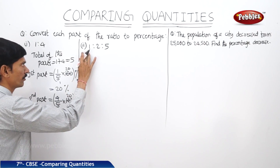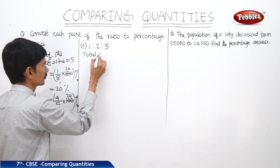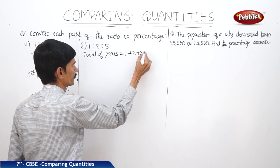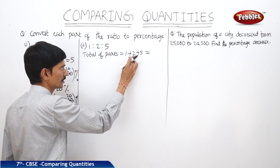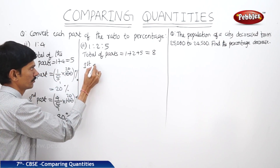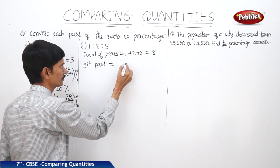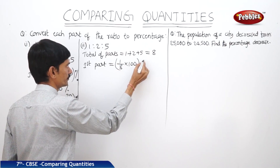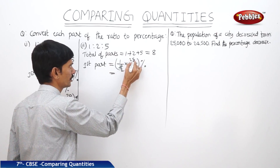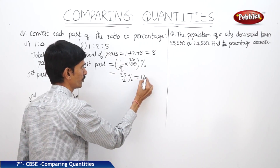Now let us check the second ratio, 1 is to 2 is to 5. The total of the parts equals 1 plus 2 plus 5. So 1 plus 2 is 3, and 3 plus 5 equals 8. Now let us find the first part. The first part equals 1 by 8 into 100%, which simplifies to 25 by 2, so that equals 12.5%.